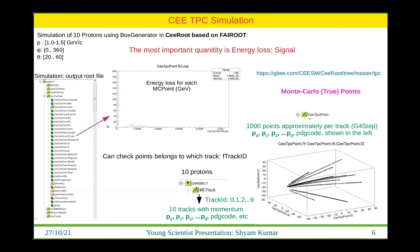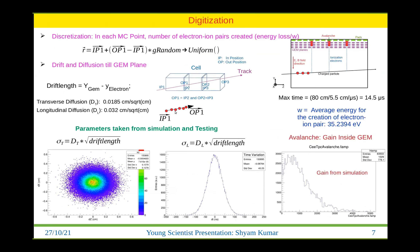For each point we can check xyz and, most importantly, the energy loss, which is basically the signal. The next step is digitization — basically discretization. When a track passes through the TPC volume, for each Monte Carlo point we calculate the electron-ion pairs created, which is the energy loss divided by the mean energy required to create an electron-ion pair. We then distribute these electrons along the track segment in the sensitive volume.